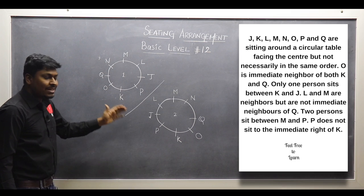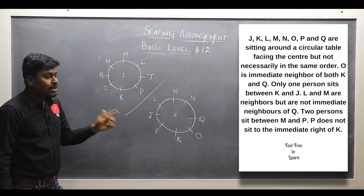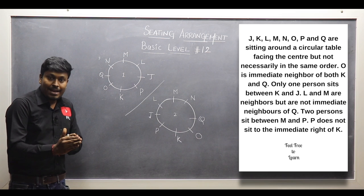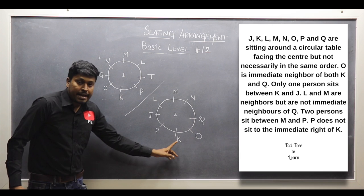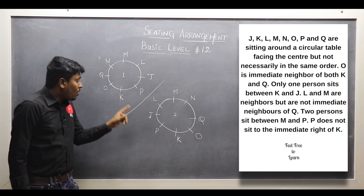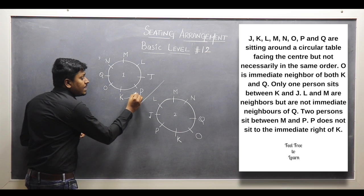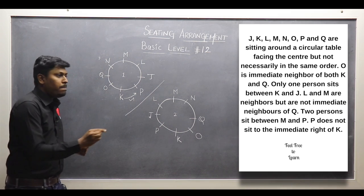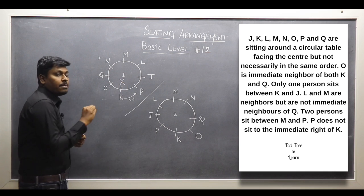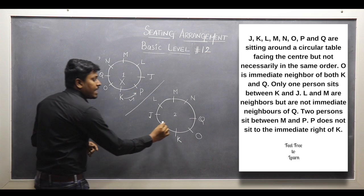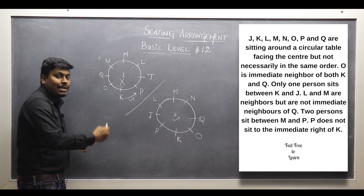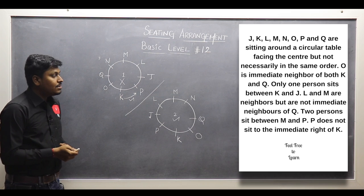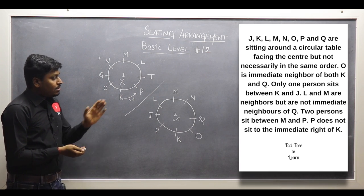We have now drawn both possible diagrams. One point remains: P does not sit to the immediate right of K. In possible diagram 1, the immediate right of K is P — which violates this condition. In possible diagram 2, the immediate right of K is not P. So possible diagram 1 is wrong, and possible diagram 2 is the correct answer for arrangement number 12.